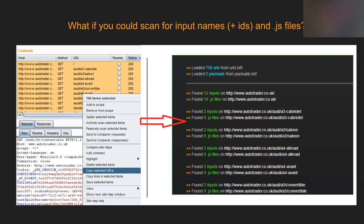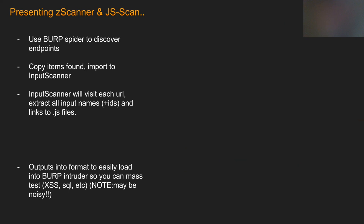I typically use 'copy selected URLs' and then feed them into my tool called ZScanner. The input scanner visits each endpoint and extracts all input names. If an input has no name, I also scrape IDs and classes. On top of that, for each endpoint it scrapes the JavaScript files, which then feeds into JS Scan.